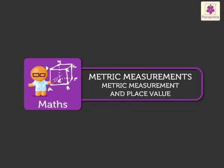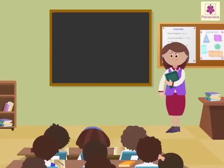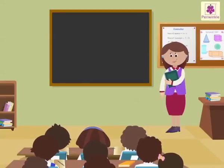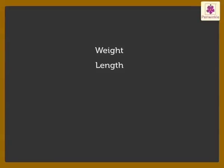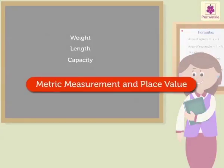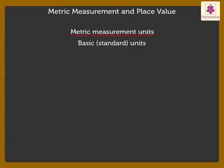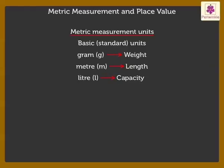Metric measurement and place value. Hello kids! Did you know that the metric measurement system is used all over the world for measuring quantities like weight, length, capacity, and many more? Let's learn about some of the units and their place values used in the metric measurement system. The three basic units are gram for measuring weight, meter for measuring length, and liter for measuring capacity. In our daily life we often need to use many other units bigger or smaller than these standard units.